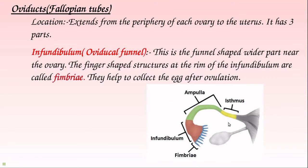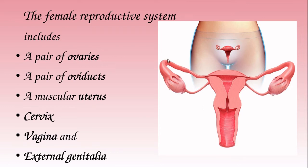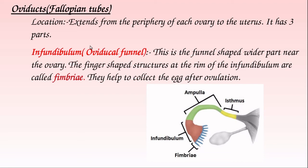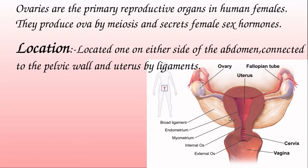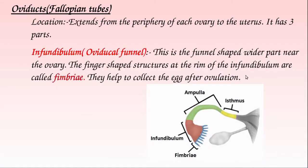The oviducts are a pair of tubular structures. They extend from the periphery of each ovary to the uterus — one tube on each side, reaching the uterus from both sides.